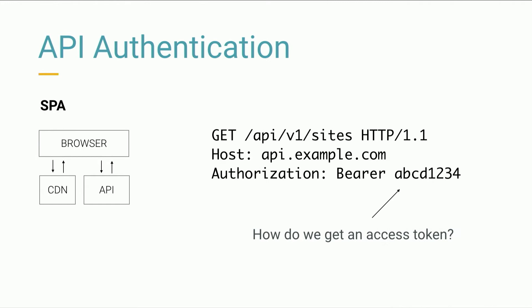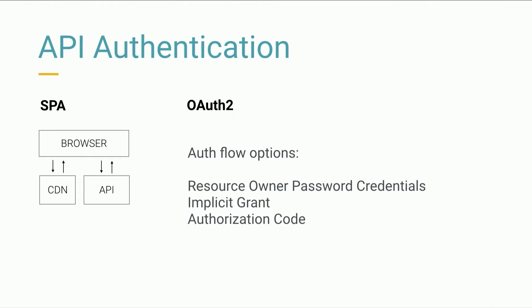That leaves us with the question: how do we get an access token into our client? We've loaded this client from the CDN with no logic involved. We obviously cannot put the access token in our front-end code — then everybody has the same access token. We can't put any secrets in the front-end code because they're no longer secret. The standard that emerged for getting an access token for an API is OAuth2.